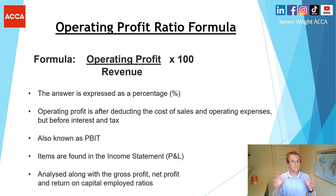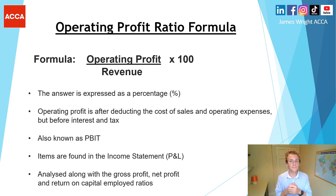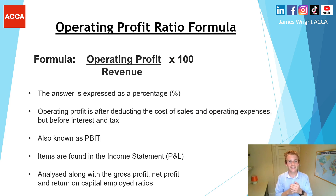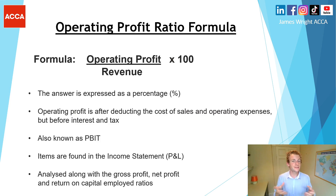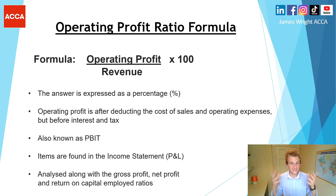The operating profit ratio formula is: operating profit divided by revenue (also known as sales or turnover), multiplied by 100 to express it as a percentage. The key thing here is that operating profit is after we've deducted cost of sales and operating expenses, but before interest and tax have been deducted — so you may also hear it referred to as EBIT. These elements will become clearer in the example coming up.